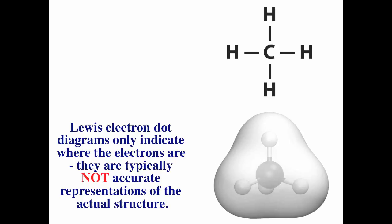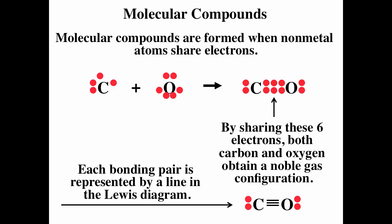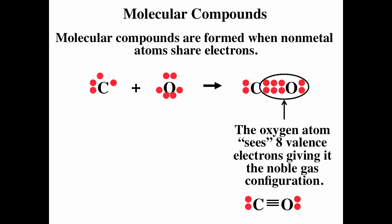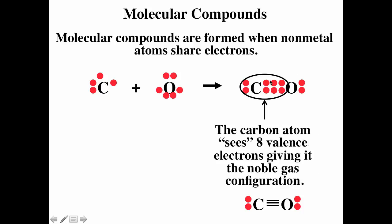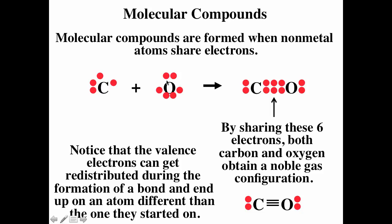Looking at carbon monoxide as another example, carbon has four valence electrons and oxygen has six. To get noble gas configuration, they actually have to share six electrons — a triple bond. By sharing those six electrons, oxygen sees eight and gets noble gas configuration, and carbon sees eight and gets noble gas configuration. When drawing Lewis diagrams, we look at the number of valence electrons, then place them trying to get the most stable structure — it does not matter where the valence electrons started.